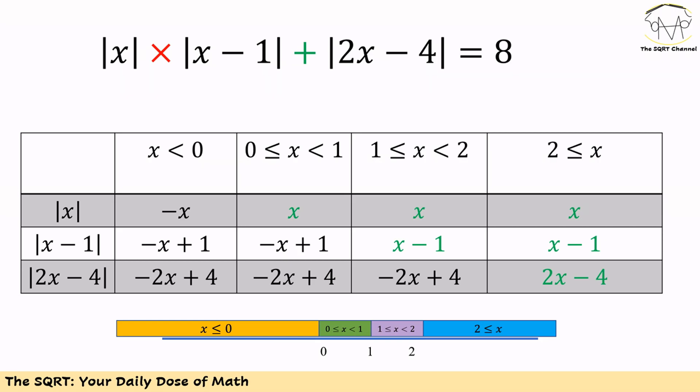|x| equals -x for the first region and +x for the other regions. For |x - 1|, it equals -(x - 1), i.e., -x + 1, for the first two regions, and equals x - 1 for the last two regions.